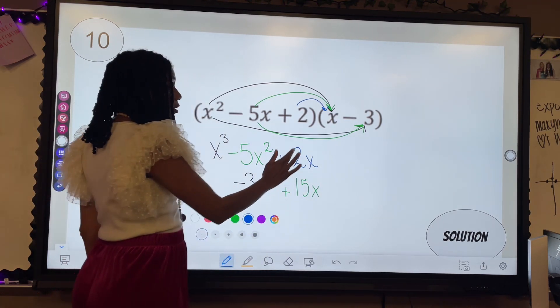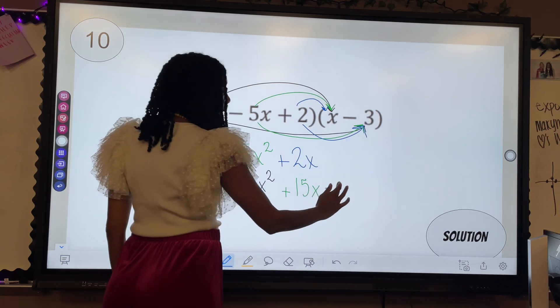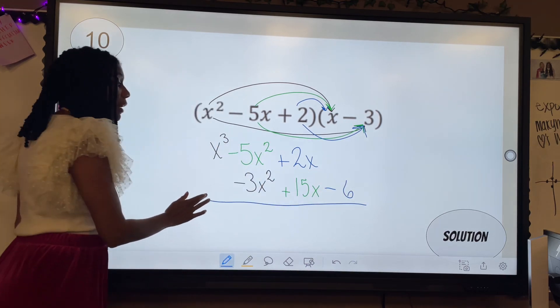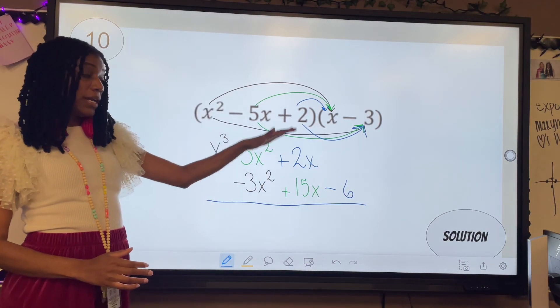Lastly, I'm going to do two times negative three, which is negative six. Now when I combine my like terms, I just go straight down.